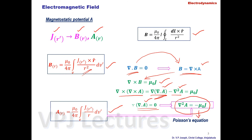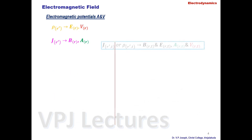This is Poisson's equation for the vector potential A. If there is no source term, it reduces to Laplace's equation, ∇²A = 0. The solution of Poisson's equation is: A(r) = (μ₀/4π) ∫ J(r')/R dV'. This is the standard method for obtaining the solution of any magnetostatic problem using the potential formulation.